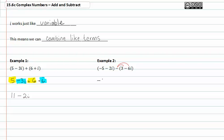We will now have -5-2i-3+6i. At this point, we can now look for like terms.